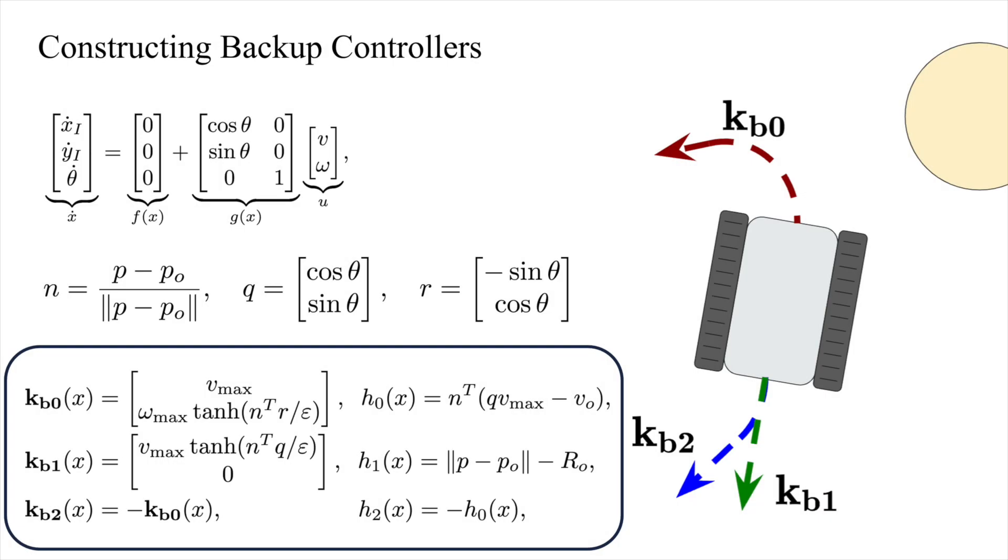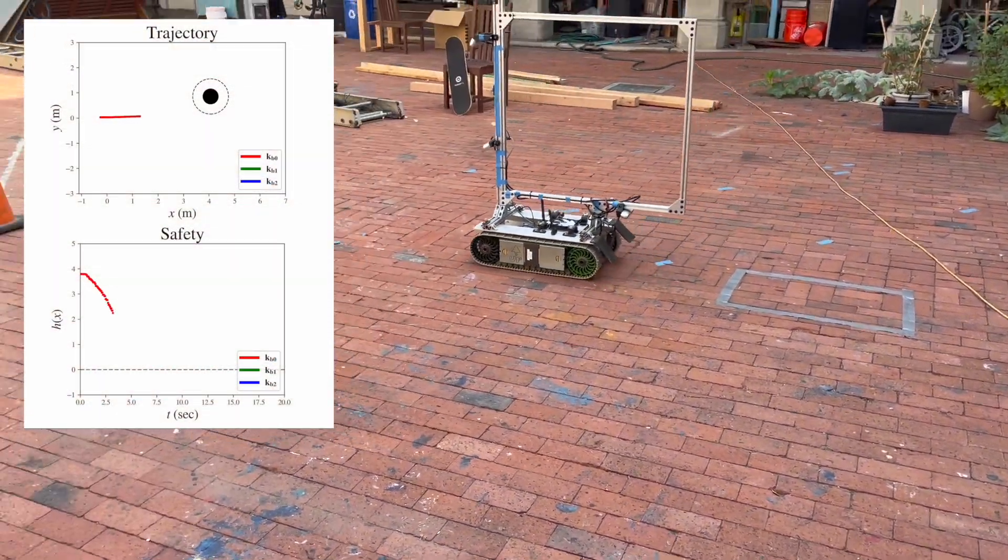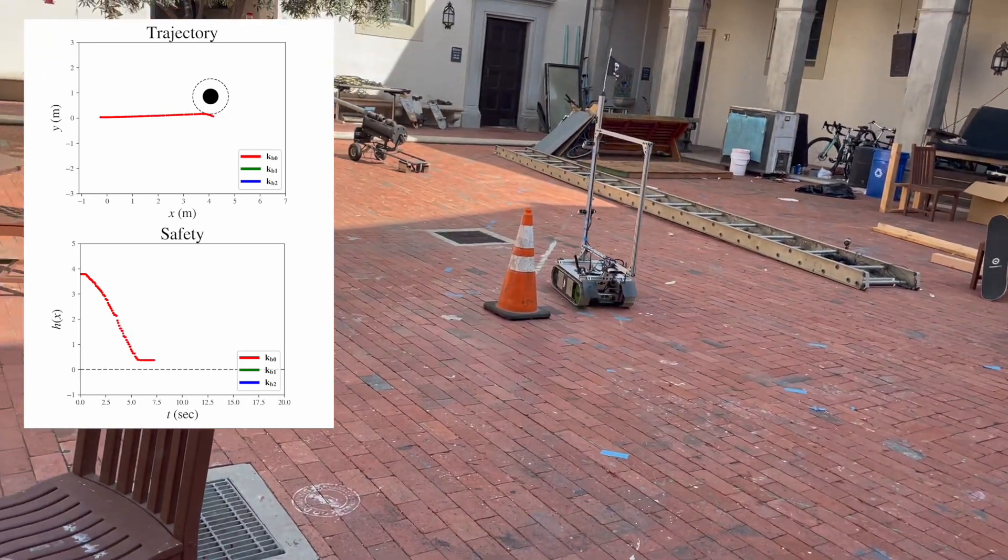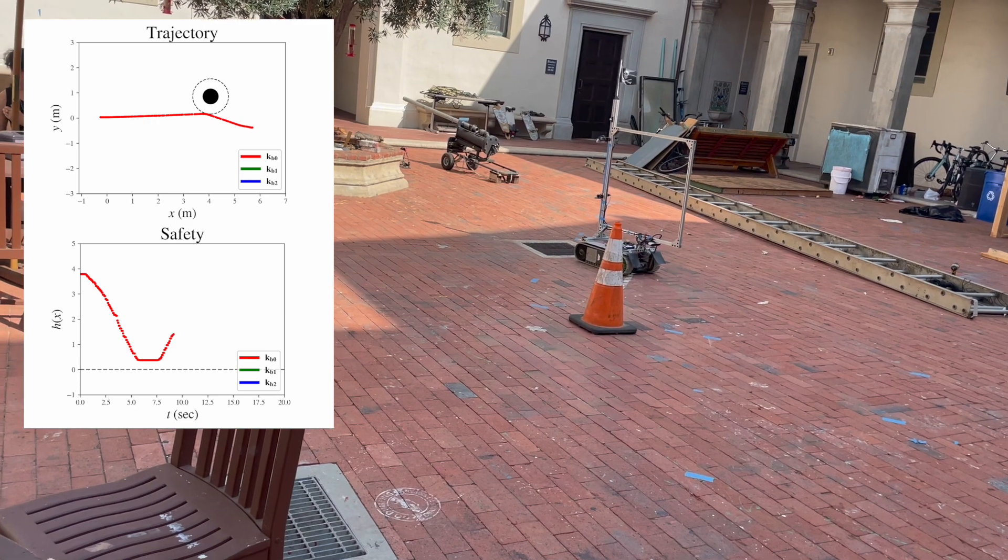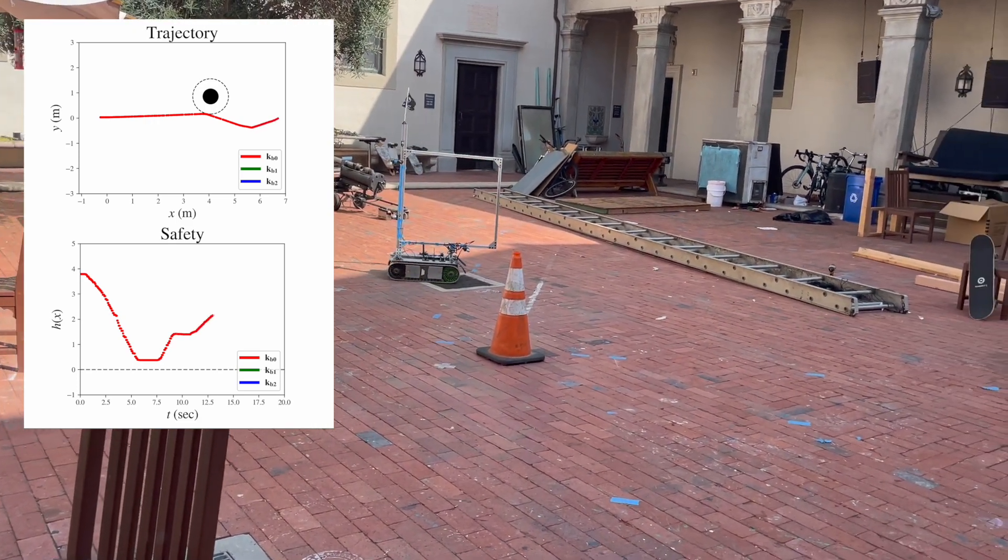For our experiments, we use backup controllers with qualitatively different behavior. We present our experiments here. First, we show an example in which only one backup controller is needed. Notice that our framework maintains safety and does not inhibit the performance of past methods, which use a single backup controller or a simpler switching mechanism.